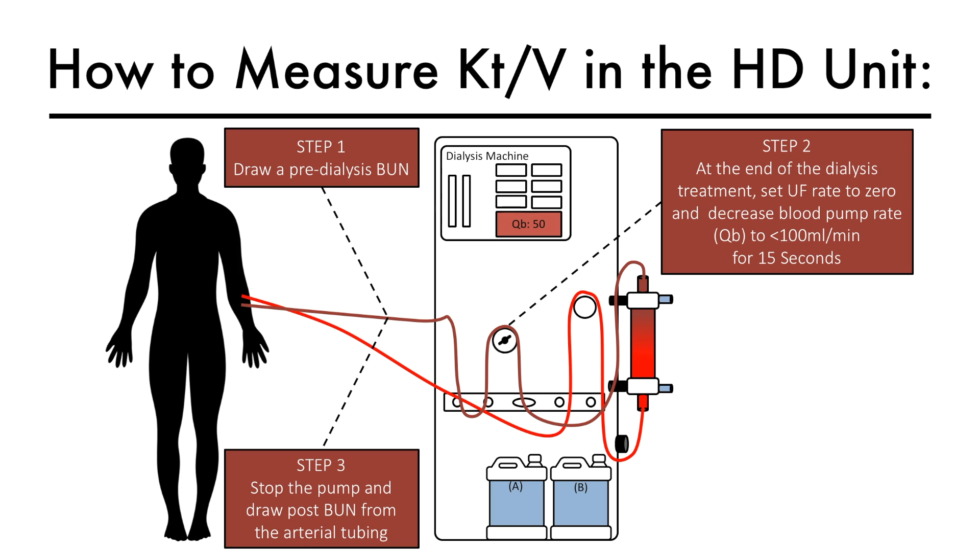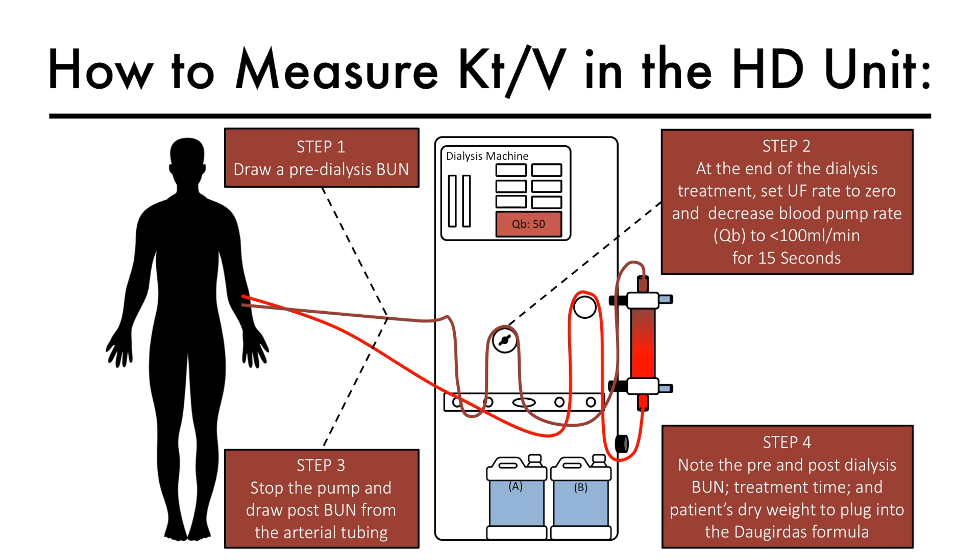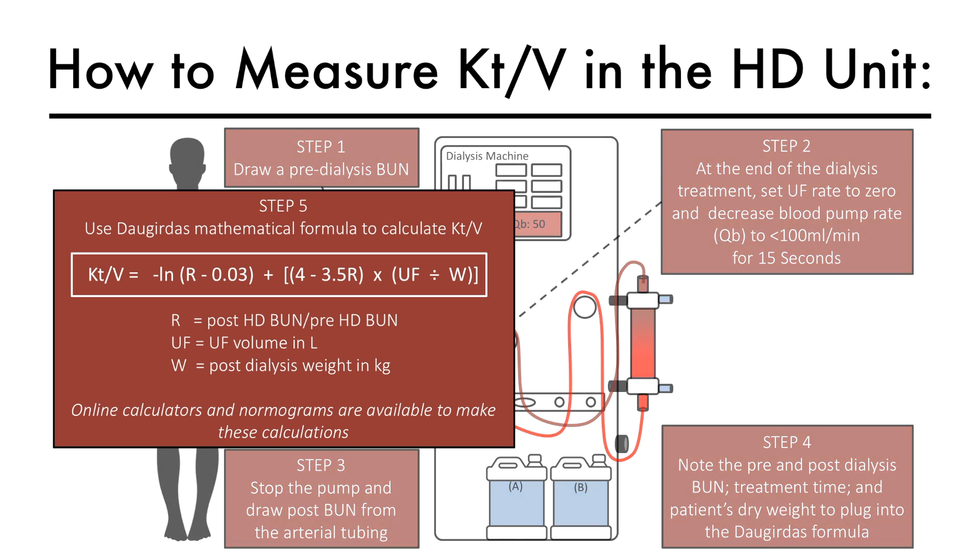This is done to decrease chances of re-entry of clean blood into the access and thus minimize cardiopulmonary and hemodialysis access recirculation. The pre- and post-BUN measurements along with the post-dialysis weight and ultrafiltration volume are then plugged into a formula and KT over V is calculated.